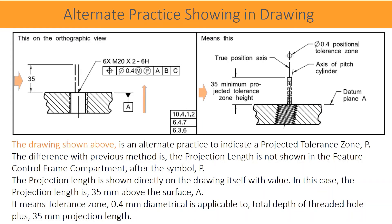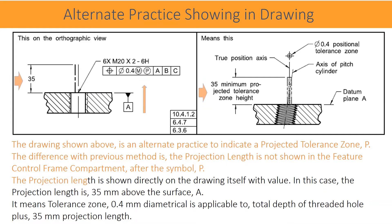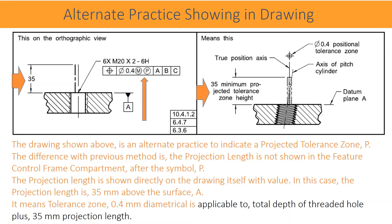The drawing shown above is an alternate practice to indicate a projected tolerance zone P. The difference with the previous method is that the projection length is not shown in the feature control frame compartment after the symbol P. The projection length is shown directly on the drawing itself with a value. In this case, the projection length is 35 mm above surface A. It means the tolerance zone of 0.4 mm diametrical is applicable to the total depth of the threaded hole plus 35 mm projection length.